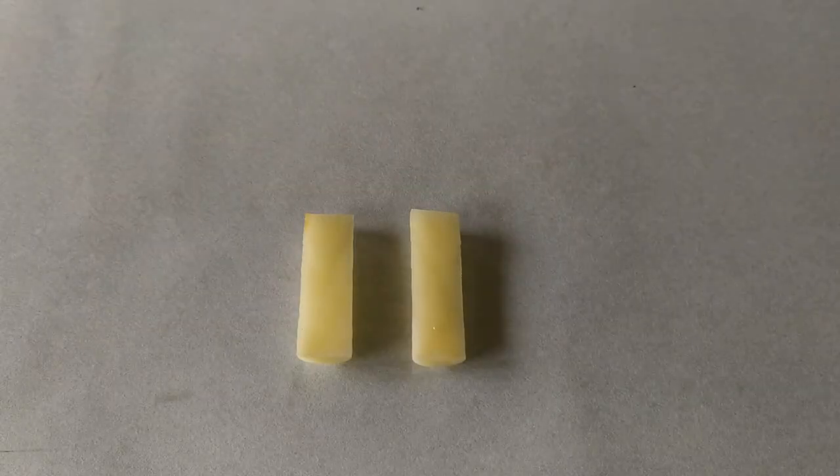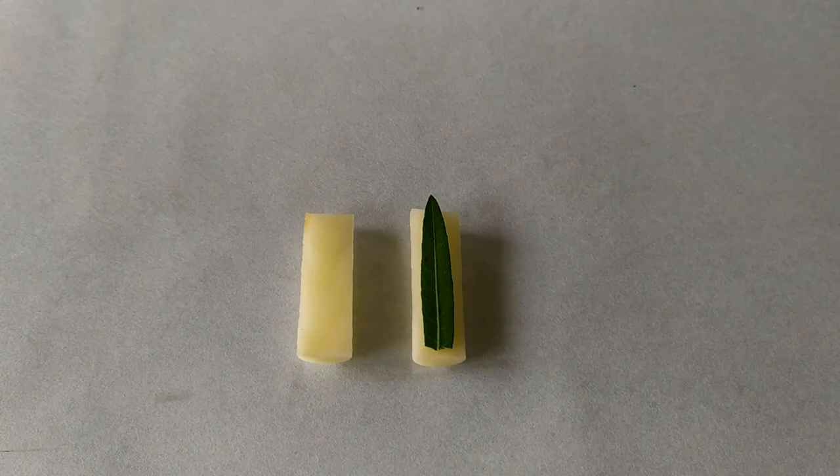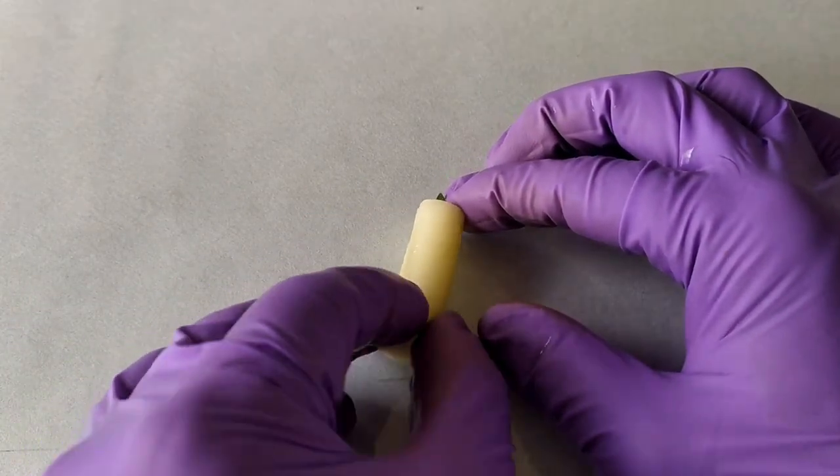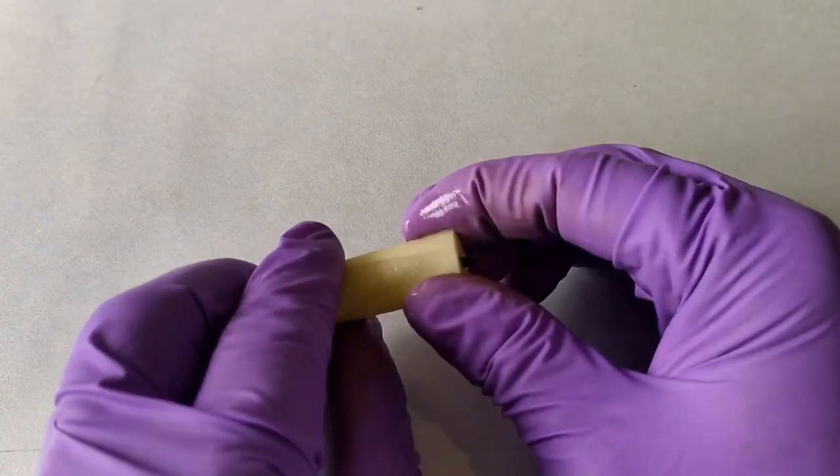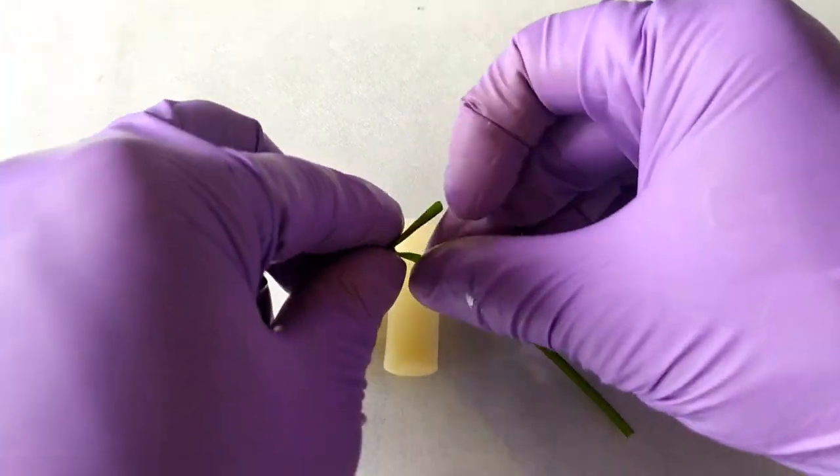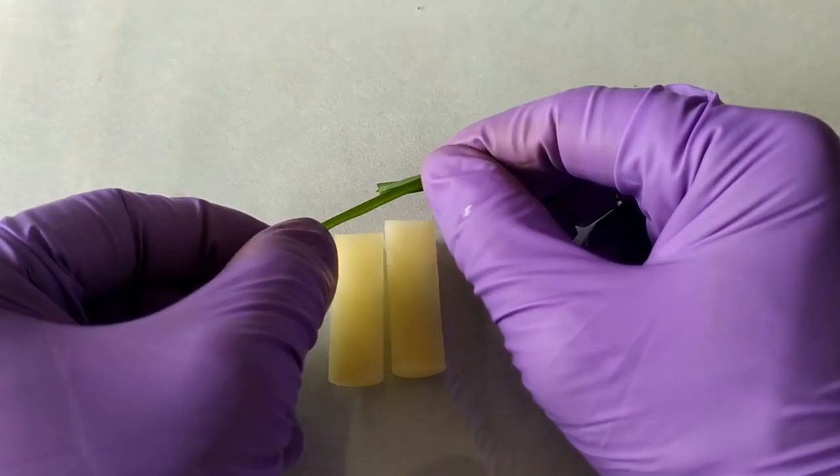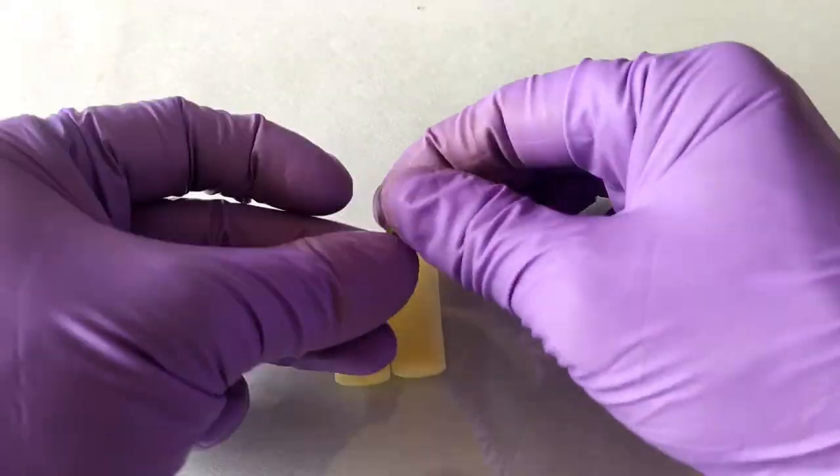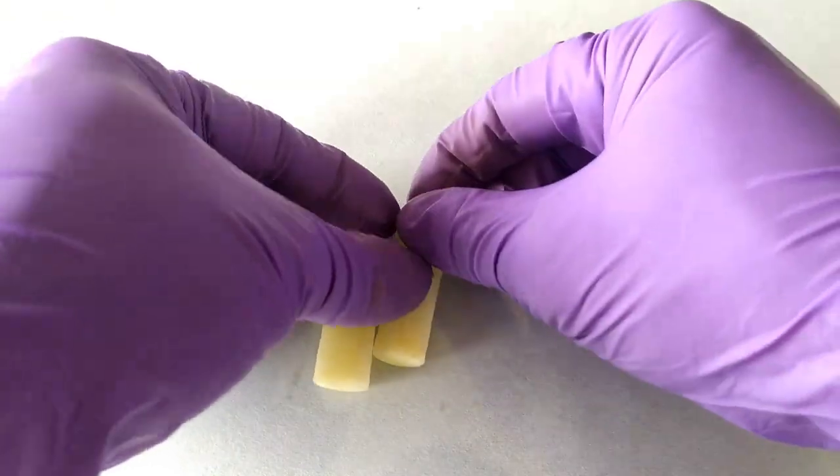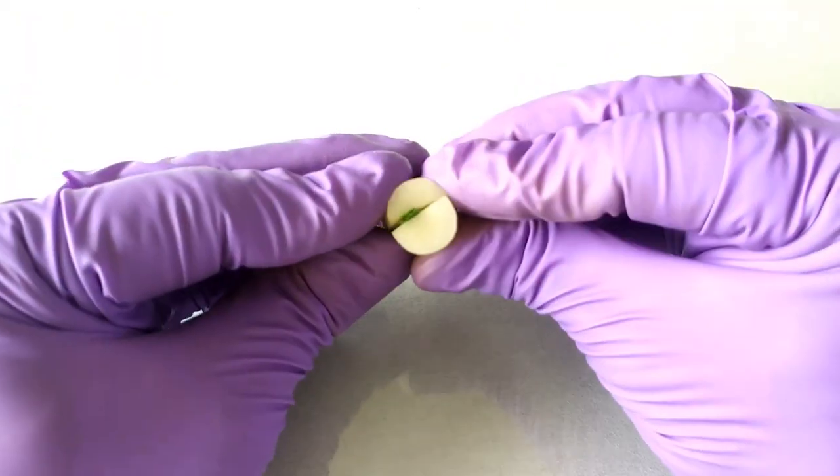For freehand sectioning of flaccid dorsiventrally flattened structures such as leaf material, you can either press a single leaf in between the pith halves or fold the leaf several times and press the folds in between the pith halves and proceed with sectioning. One advantage of folding the leaf into many layers is that you get several sections with one single cut.